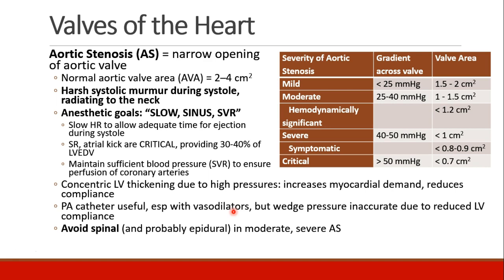Let's talk about some specific valve lesions and how we approach them in anesthesia. The first and one of the most common is aortic stenosis — a narrow opening of the aortic valve. The cross-sectional area of the aortic valve is usually 2 to 4 square centimeters. As the valve narrows, we start to have a harsh systolic murmur during systole that radiates to the neck. Aortic stenosis can be classified as mild, moderate, severe, or critical. As the valvulopathy gets worse, the pressure gradient across the valve increases and aortic valve area decreases.